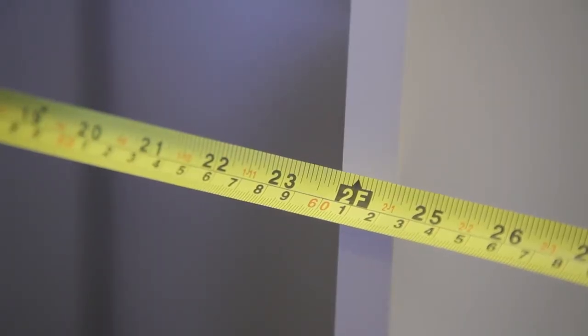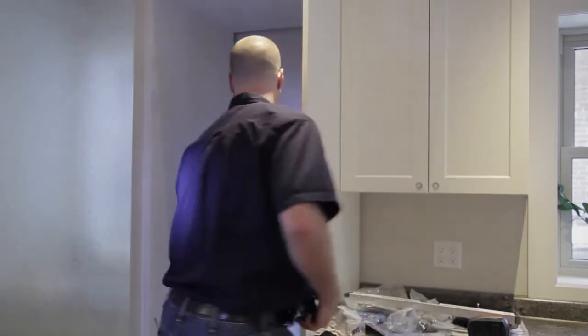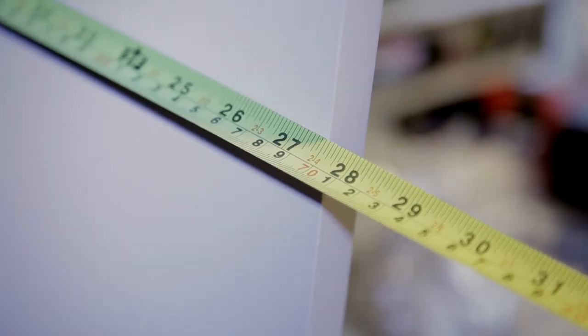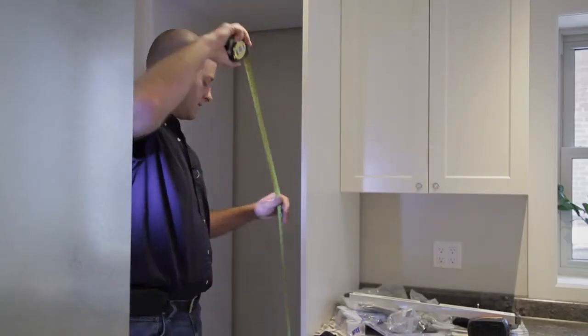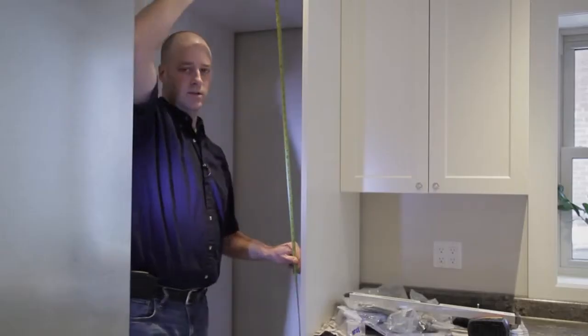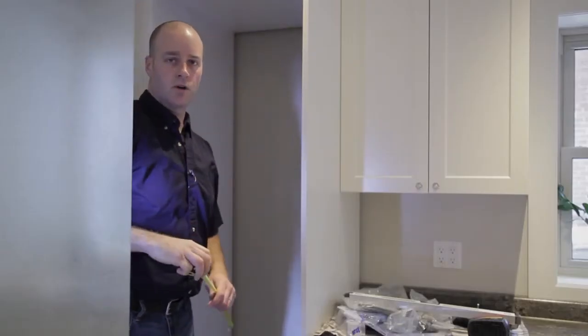Niche width at 23 and 3 quarters. Niche depth at 27 and a half. And niche height right around 84 inches. So we're all good.